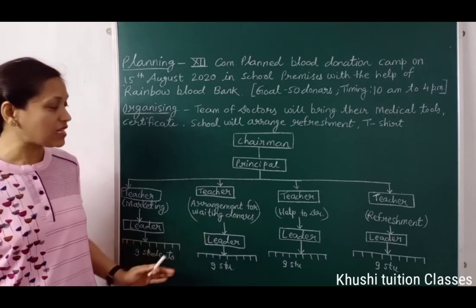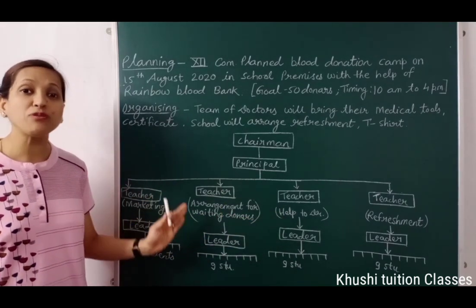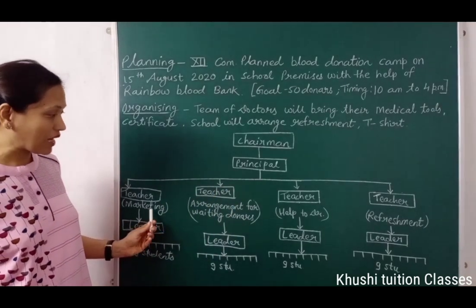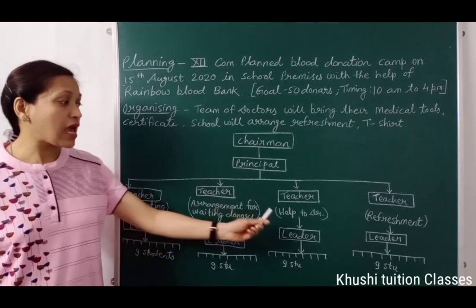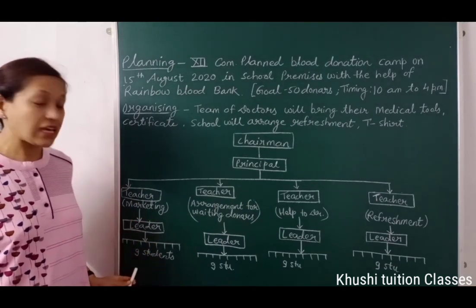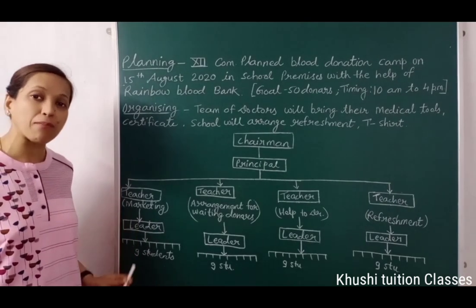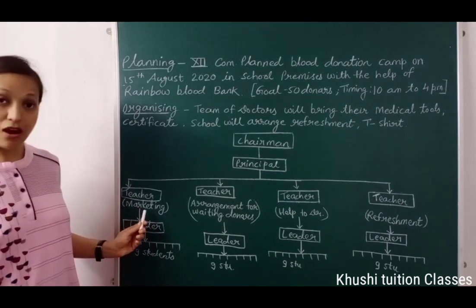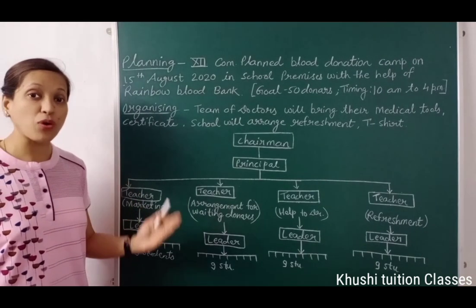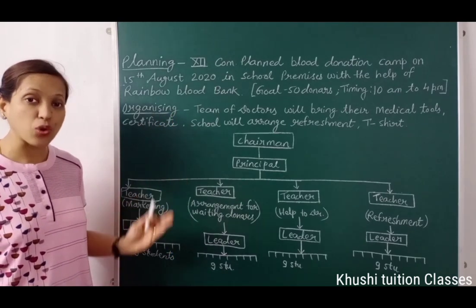सबसे पहले organizing के लिए हमने total work identify किया. इस work को different groups में divide किया — total four groups में: Marketing, arrangement for waiting donors, help to doctors, और refreshment. अब एक team एक काम ही देखेगी, यानि हमने एक department बनाया जिसमें similar work सभी team members मिलकर करेंगे. जैसे first team, first in-charge teacher देखेगी marketing का काम — जिसमें donors को motivate किया जाएगा कि वे blood donation camp में आएं और blood donate करें.